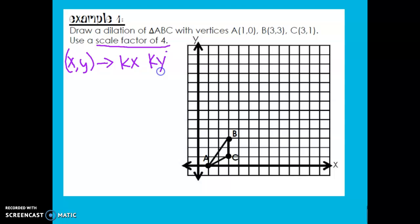And I told you that k stands for the scale factor. So if I take point A, which was (1, 0), and I multiply k, which is 4, times 1, that's going to give me 4. So my A prime is at (4, 0).